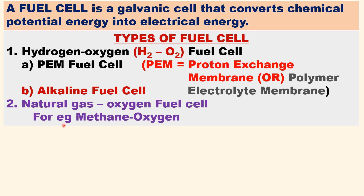The second major type is the natural gas-oxygen fuel cell. Instead of hydrogen, natural gas — for example, methane — is used as the fuel.